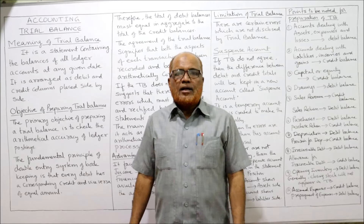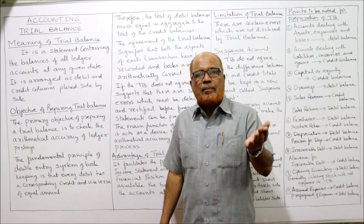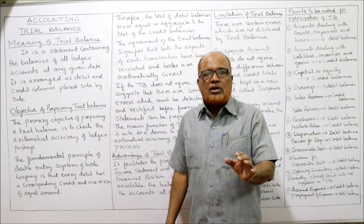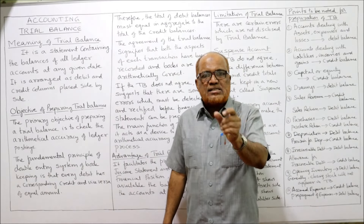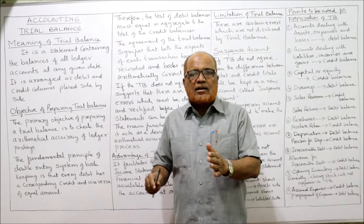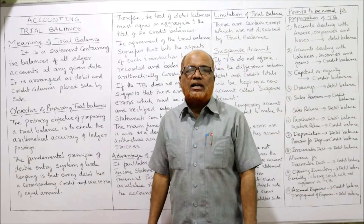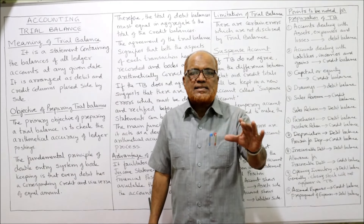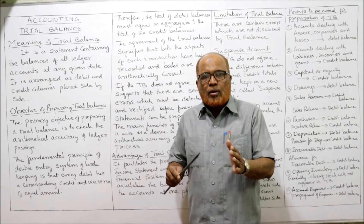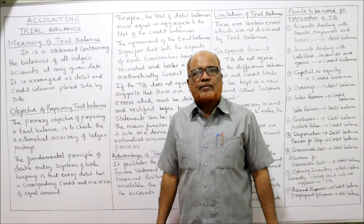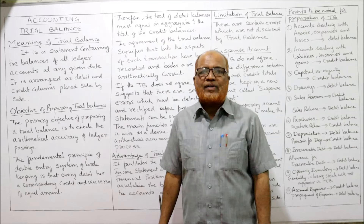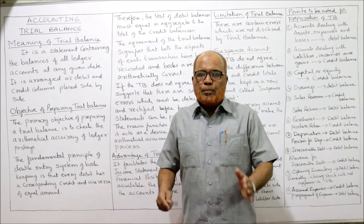At the end of the year, all accounts should be closed and balancing should be done. Some accounts may show a debit balance and some may show a credit balance. We collect all the debit balances and credit balances of ledger accounts and put them into a statement, and that statement is called the trial balance. The trial balance is prepared before making the financial statements, which consist of the income statement and statement of financial position.